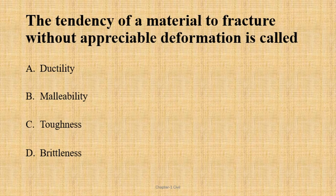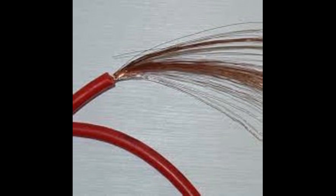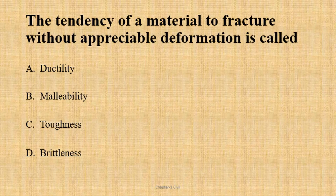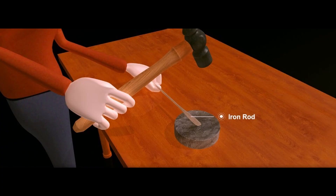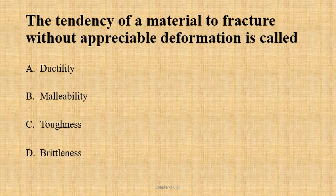If there is small deformation and the material fractures or collapses, that means brittleness. Other related properties include toughness. The tendency of a material to fracture without appreciable deformation — the answer is brittleness.